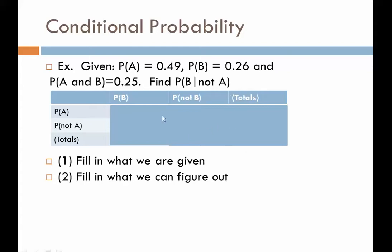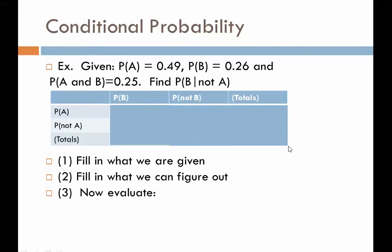Draw this on a piece of paper and we'll fill it out together. First, let's put in what we have. Probability of A is 49%, so in the totals column we put 0.49. Probability of B is 26%, so the B total goes to 26%. We also know the grand total must be 1. Since B totals 26%, not-B must be 74% to add up to 1. Since A totals 49%, not-A is its complement, which is 0.51.